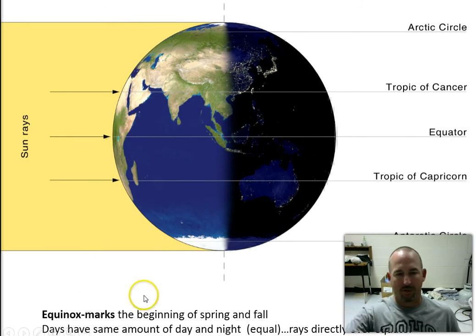The equinox marks the beginning of spring and fall. Both of those days have the equal amount of day and night. That's why it's like equinox, because of equal. The rays are directly over the equator.